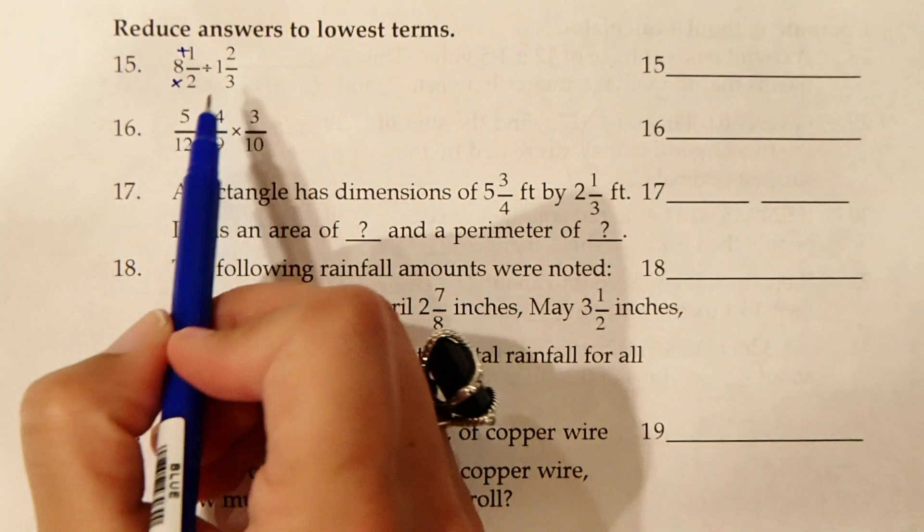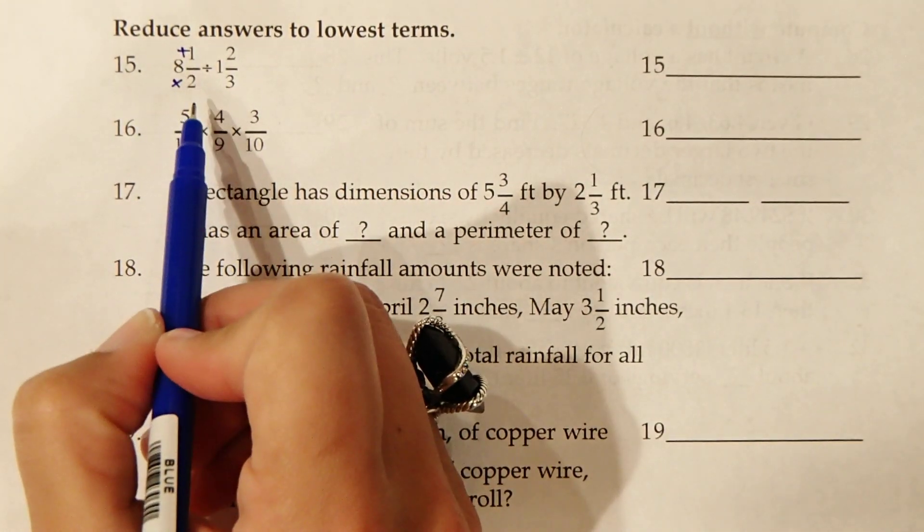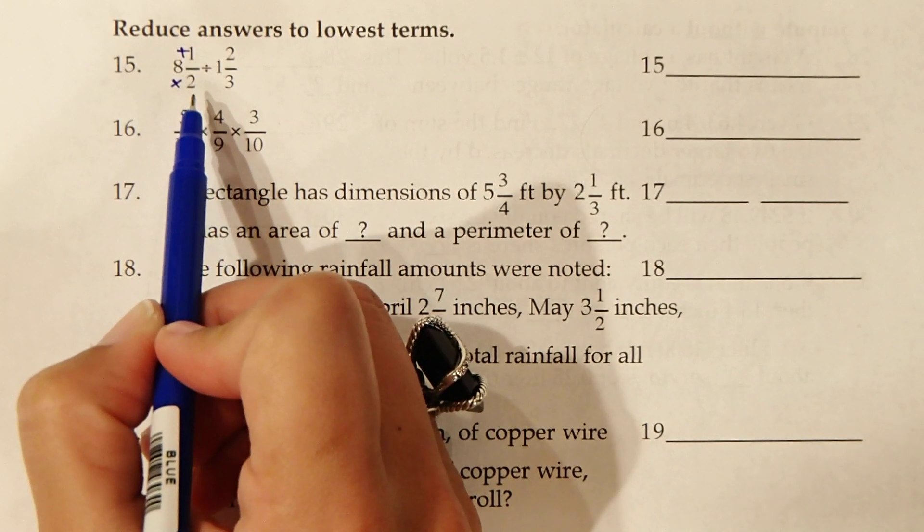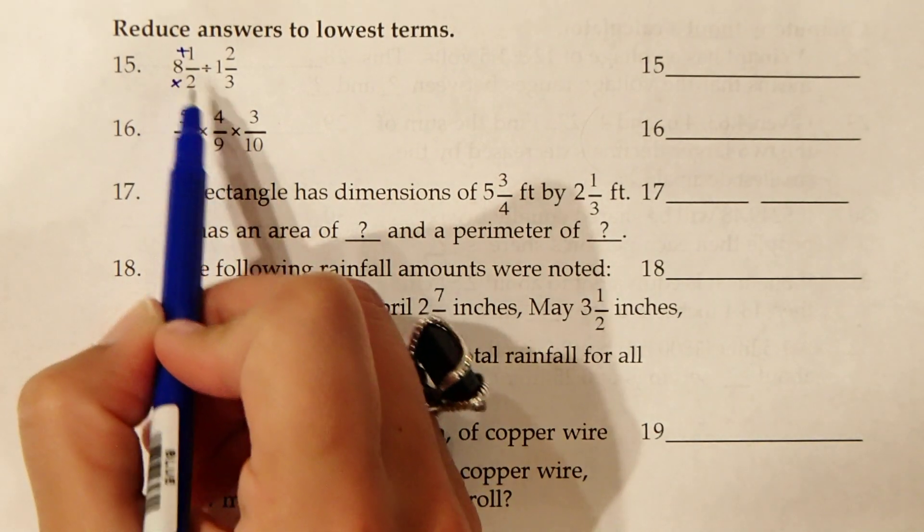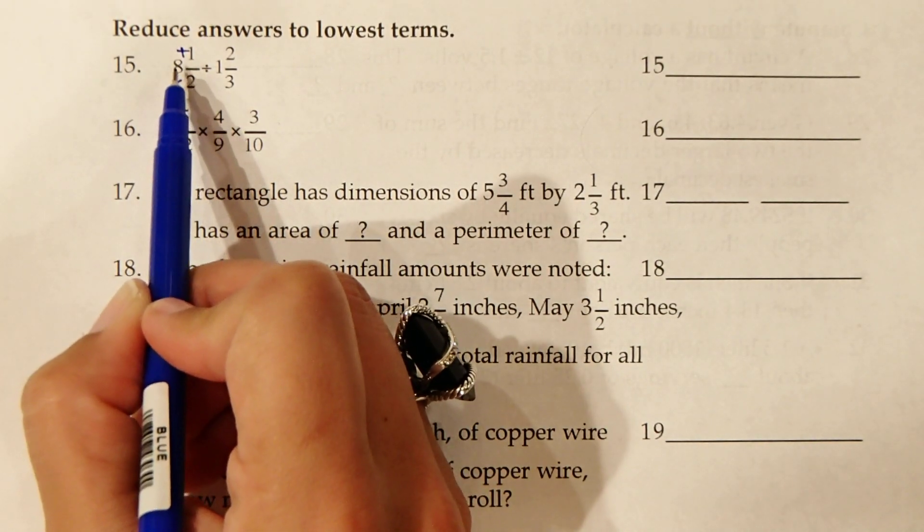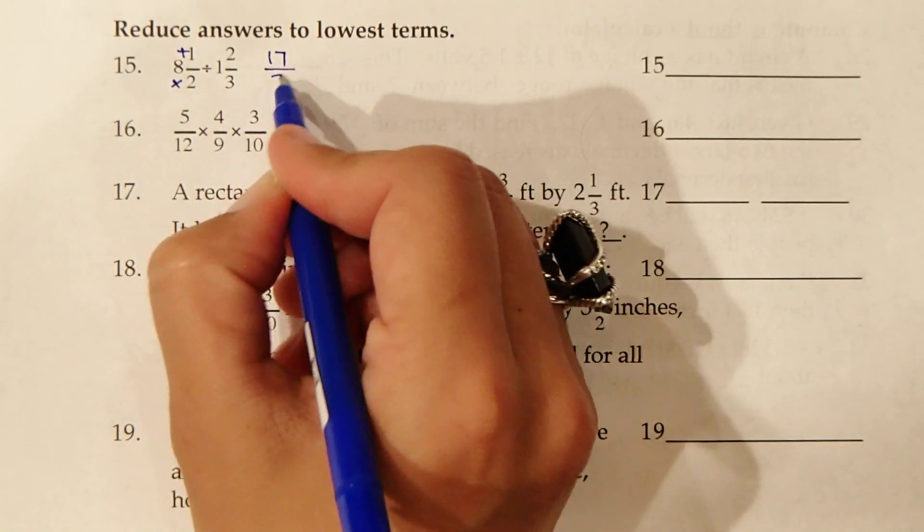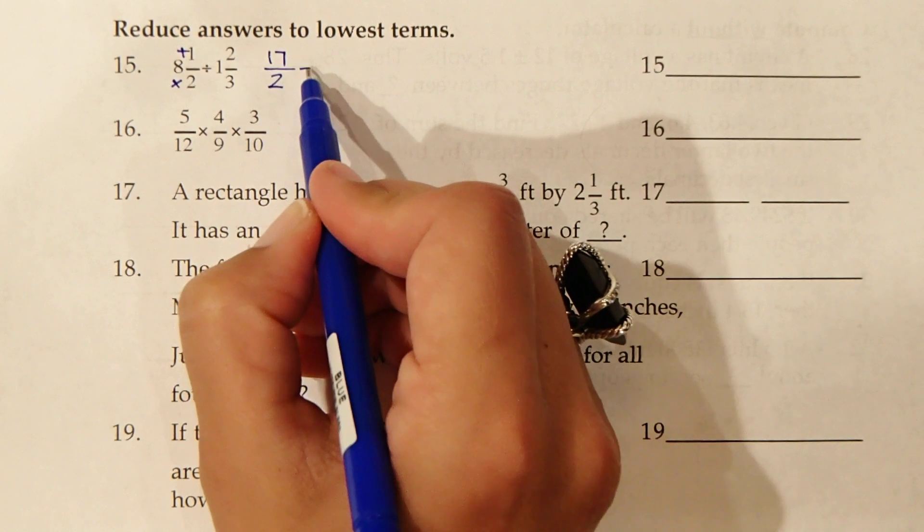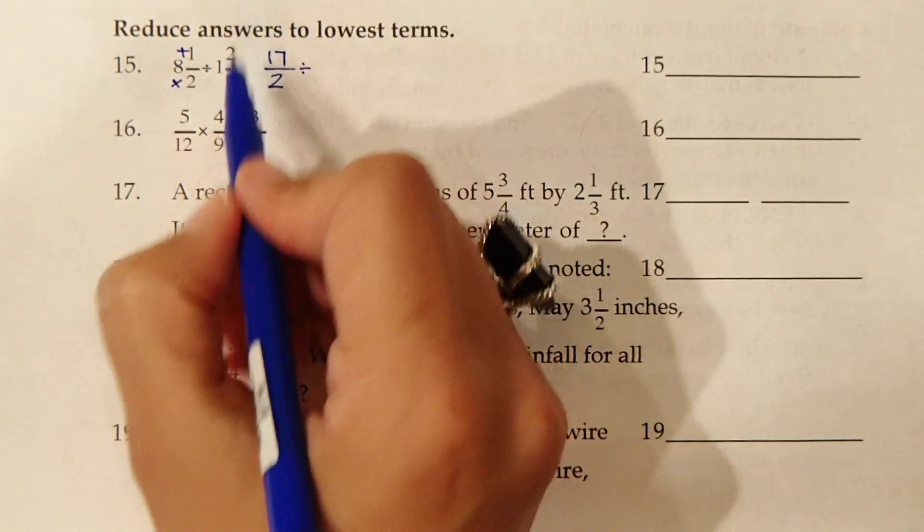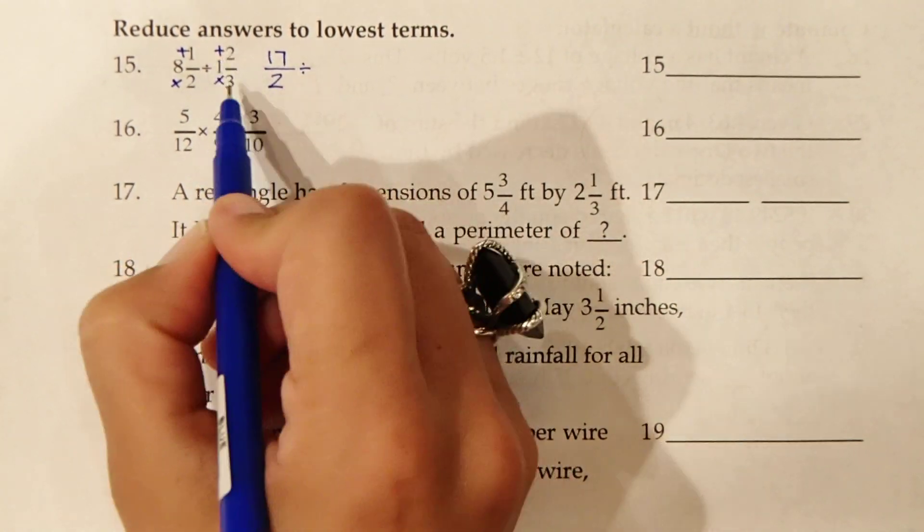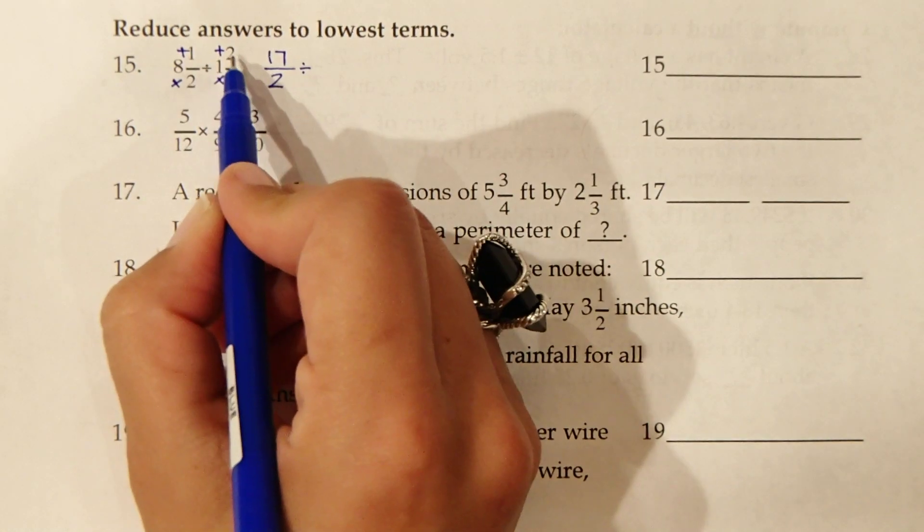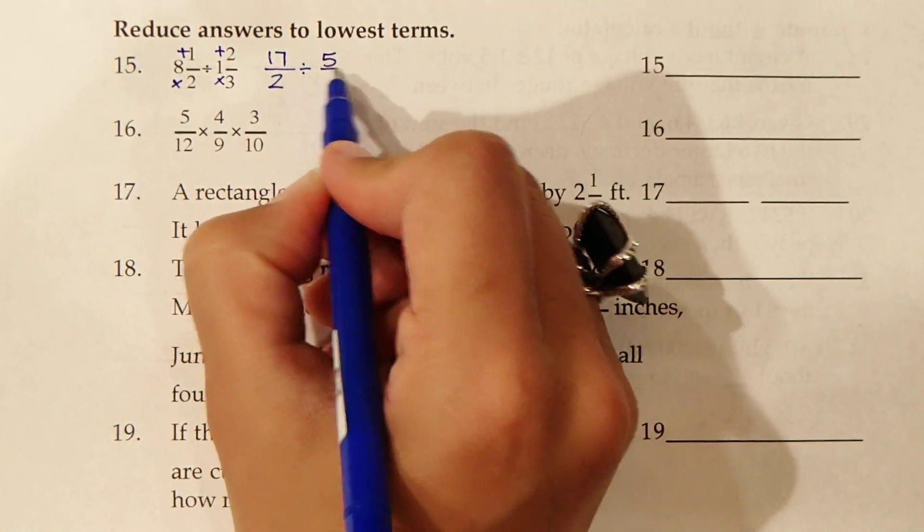Beginning with number 15, we have 8 and 1 half divided by 1 and 2 thirds. These need to be in improper fraction format before we can continue. When converting a mixed number to an improper fraction, multiply the denominator by the whole number. 2 times 8 is 16, and add the numerator. 16 plus 1 is 17. Denominator stays the same.